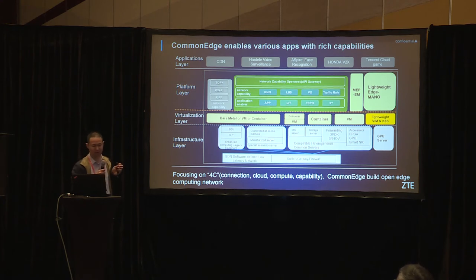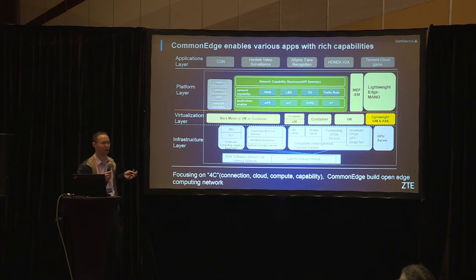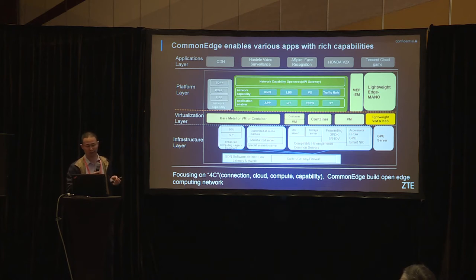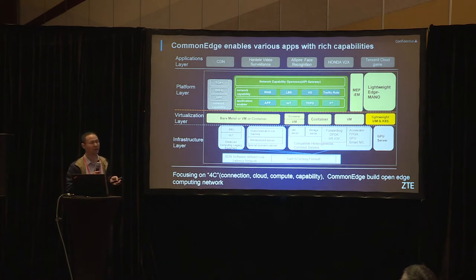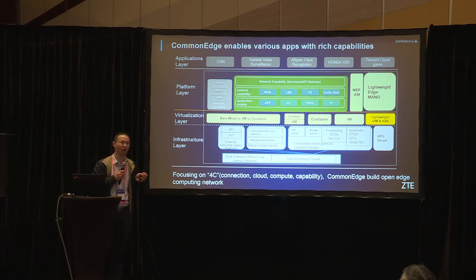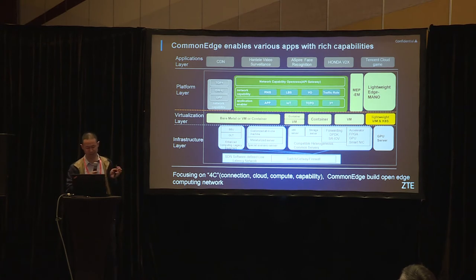In summary, we focus on the 4C: Connection — provided by UPF and different gateways; Cloud — by OpenStack and Kubernetes; Compute — with different computing resources and hardware acceleration capabilities; and Capability — belonging to both IT and telecom domains.